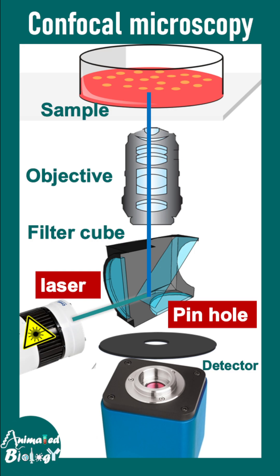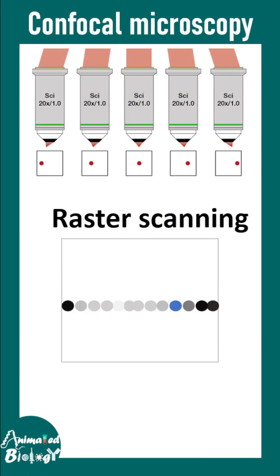Here is the light path of a confocal microscope. The laser goes through a filter cube, travels through the objective, and illuminates the fluorescent specimen. Light from the specimen travels back past the dichroic mirror and past the emission filter. Before it reaches the detector, it hits the pinhole, where all out-of-focus light is cancelled.